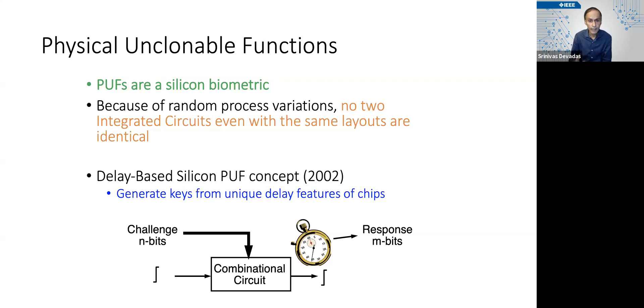So physical unclonable functions or PUFs could be viewed as a silicon biometric. Observing 3D structure variances is difficult, but the fact is that the differences in fabrication manifest themselves as differences in delays of wires as well as gates. And this brought about the notion of delay-based silicon physical unclonable functions.